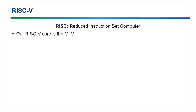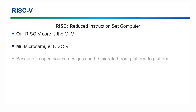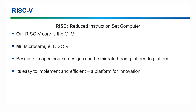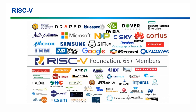Our core is called the Mi5. The Mi is for MicroSemi and the 5 is the 5 from RISC-V. It's got great portability as it's open source, so you can move from platform to platform easily. RISC-V is very efficient and easy to implement, and we've made it even easier with the development of the Mi5. There's an organisation called the RISC-V Foundation with over 100 members. The mission is to standardise, protect and promote the free and open RISC-V ISA and its hardware and software ecosystem for use in all computing devices.